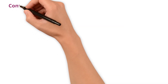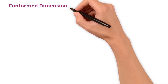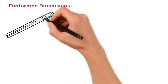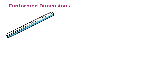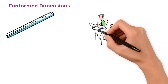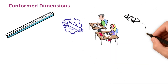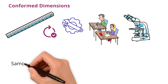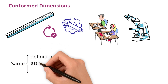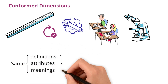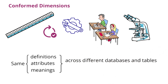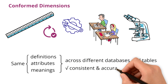Let's begin with the first one. Conformed dimensions are like the markings on a ruler. No matter where or by whom the ruler is used — whether it's in the classroom, a workshop, or a science lab — the measurements remain consistent. Similarly, conformed dimensions have the same definitions, attributes, and meanings across different databases and tables, so that everyone in an organization can make consistent and accurate data analysis.